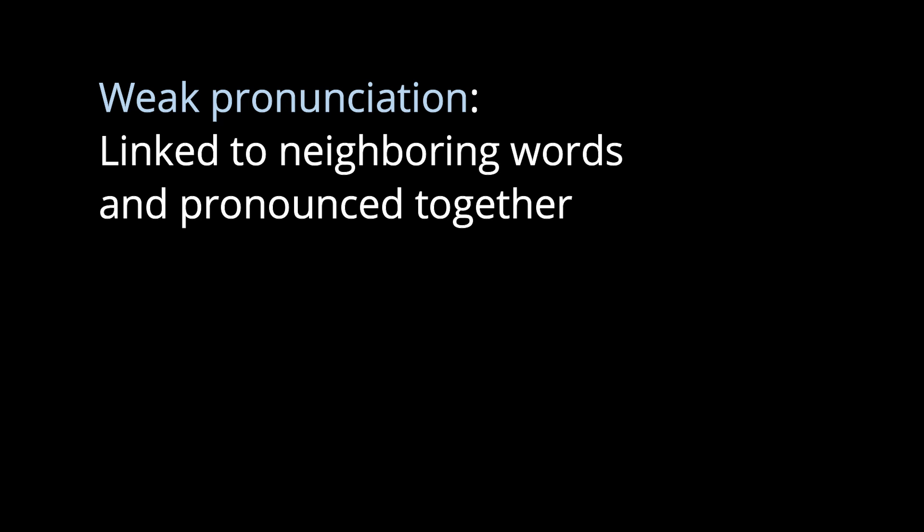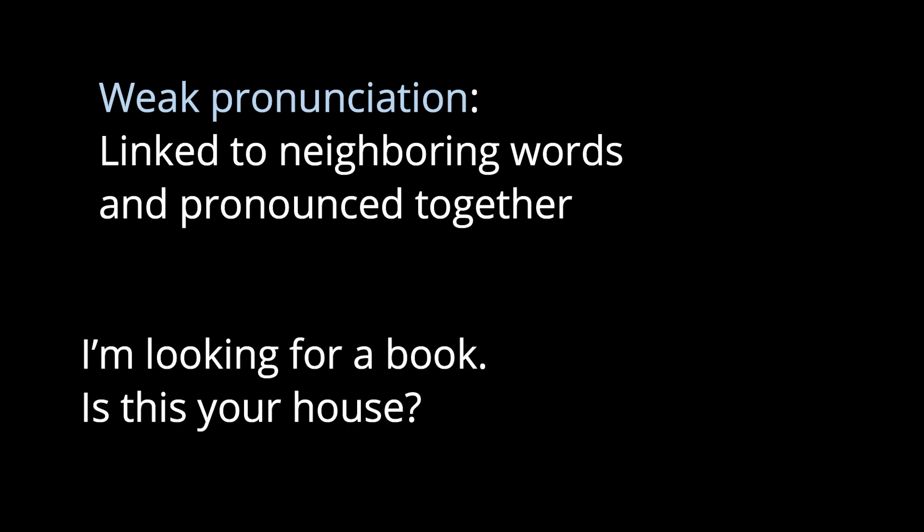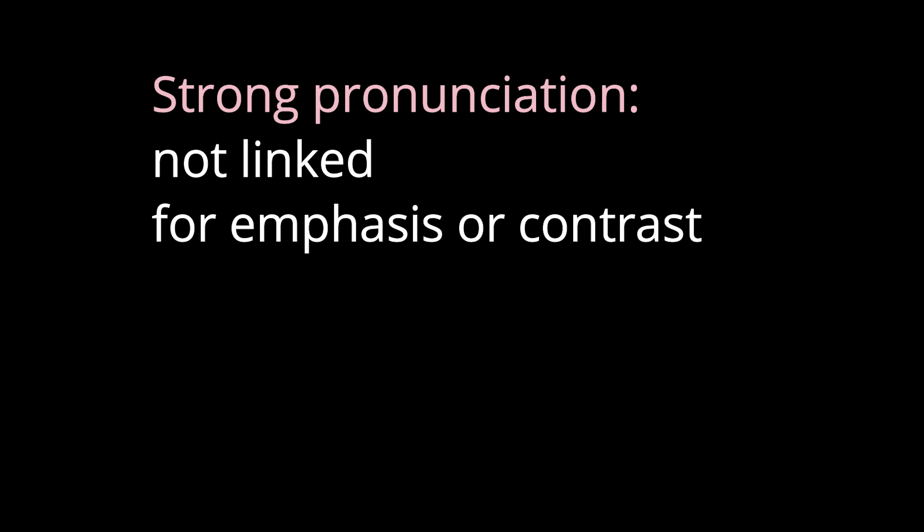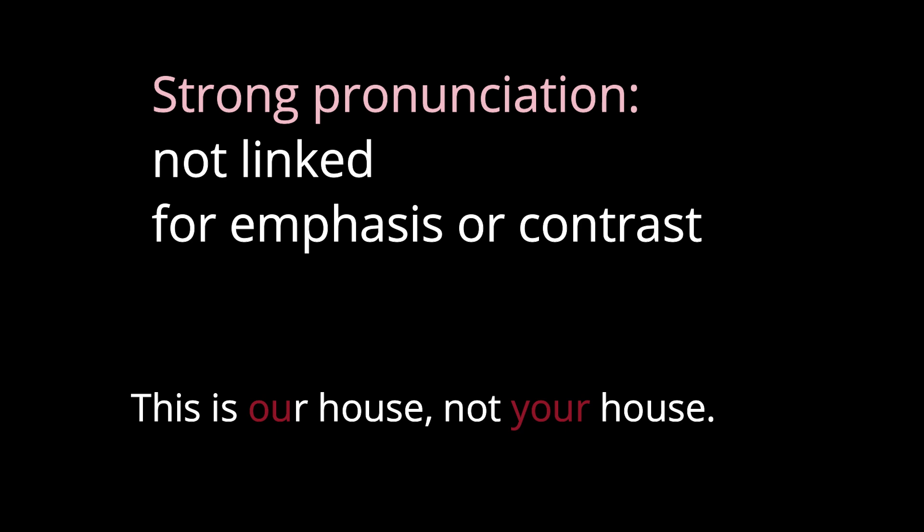In their weakened forms, function words are not pronounced independently, but are linked to their neighboring words and pronounced together. For example: "I'm looking for a book." "Is this your house?" If they are used for emphasis or contrast, the strong form is used. For example: "This is our house, not your house."